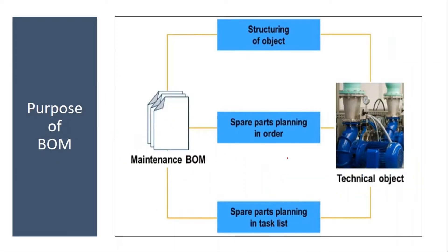The bill of materials are created for three reasons: one is structuring of the object — you get the structure of the object; second is spare parts planning in the order — during work order processing you plan the spare parts; and the third is spare parts planning in the task list. This we will see when we go to preventive maintenance. In preventive maintenance, we create a task list, and at that time we will see how these BOMs are used in the task list.